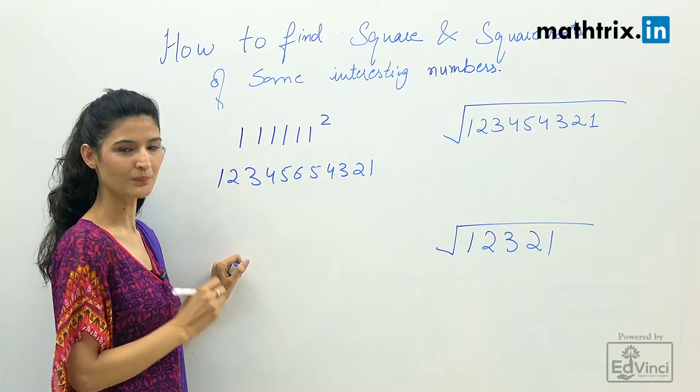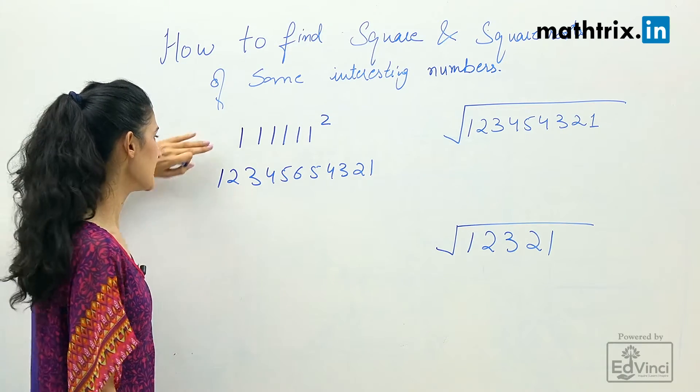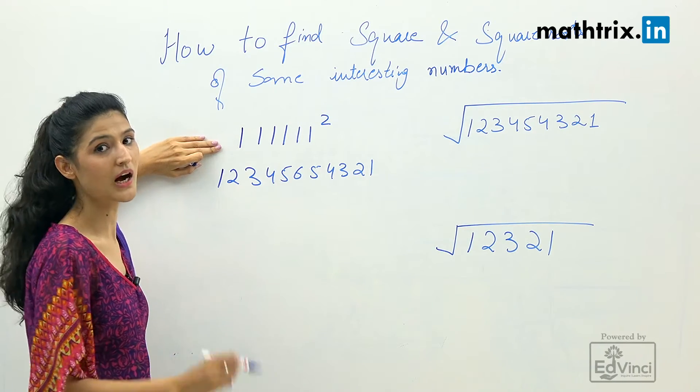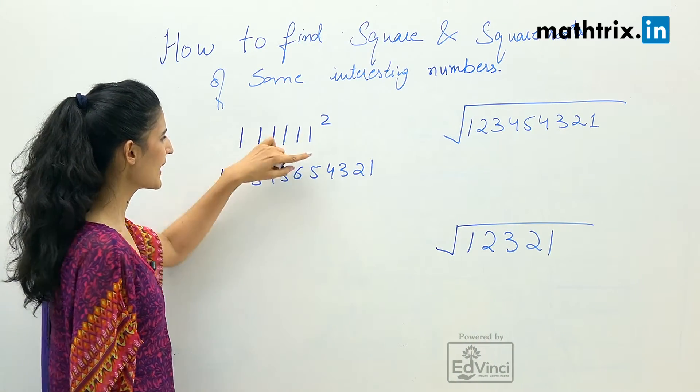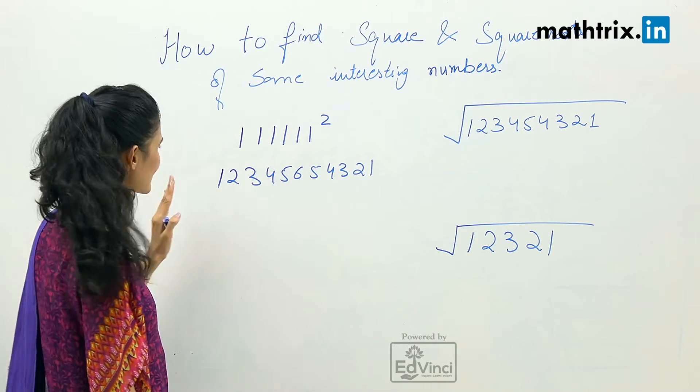The answer for this is 123456654321. Do you want to know how? The answer for this number is very simple. You have to count how many ones do we have.